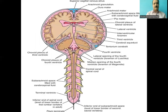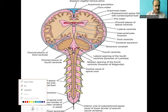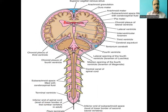This is the ventricular system of the central nervous system. It comprises two lateral ventricles, the third ventricle, the fourth ventricle, and the central canal of the spinal cord. The two lateral ventricles communicate with the third ventricle through the interventricular foramen of Monro, whereas the third ventricle communicates with the fourth ventricle through the aqueduct of Sylvius. The fourth ventricle communicates with the central canal and also with the subarachnoid space through three foramina — the foramen of Magendie and, laterally, the foramina of Luschka.